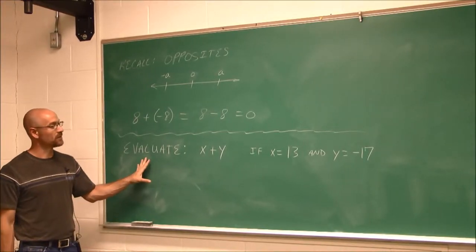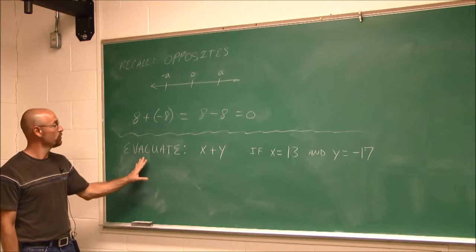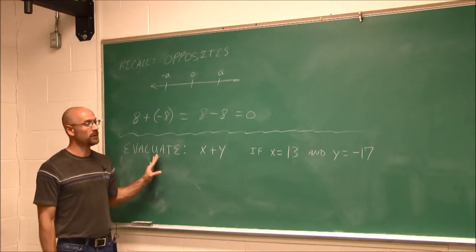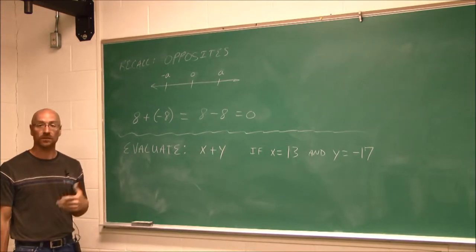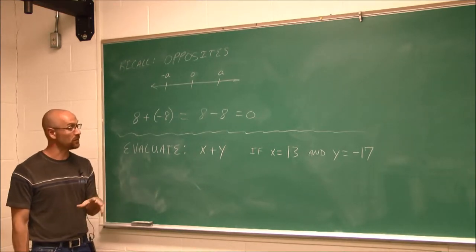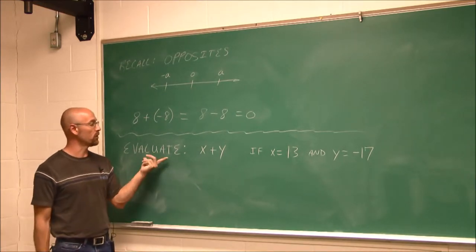All right, welcome back. This is section 1.9, part 2. We're going to evaluate an expression given some integers, and sometimes integers are positive, sometimes they're negative. So we're going to evaluate.